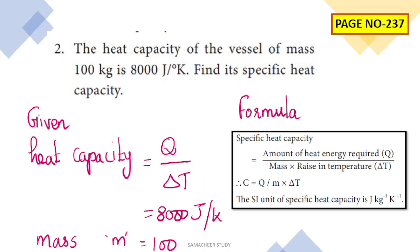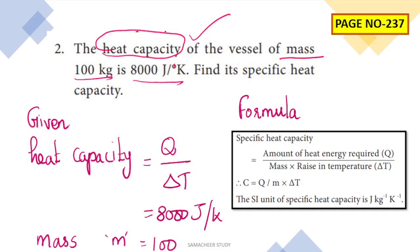Second question: the heat capacity of a vessel of mass 100 kilograms is 8000 joules per Kelvin. Find its specific heat capacity. In the previous question we calculated heat capacity; in this question, heat capacity is given as 8000 joules per Kelvin and mass is given as 100 kilograms. We use the formula: heat capacity equals Q divided by delta T, so Q divided by delta T equals 8000 joules per Kelvin.